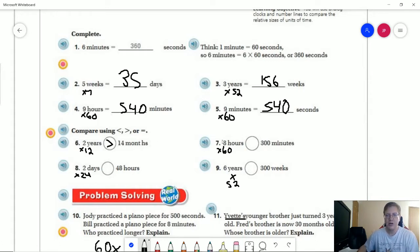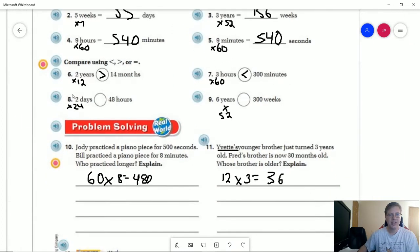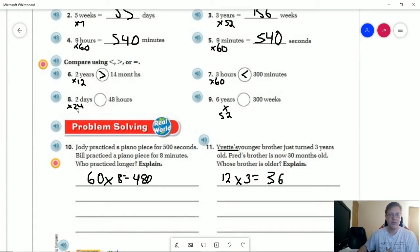For number seven, we are going to multiply three hours times 60 minutes. That's going to give us 180 on this side compared to 300 on this side. And so we would use the inequality symbol for less than. For number eight, we can multiply two days times 24 hours. That gives us 48 hours compared to 48 hours. And so that is going to be equal.